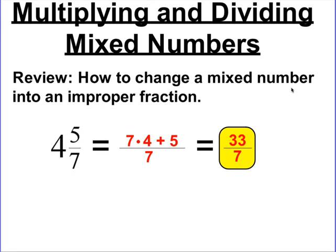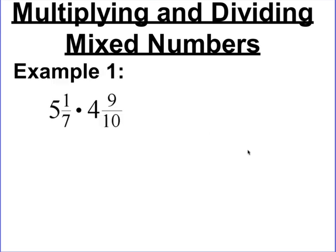We're going to do that with all of the mixed numbers in the problems first, and then we're going to use all of the rules you've already learned from multiplying and dividing fractions. Here's the first example: 5 and 1 sevenths times 4 and 9 tenths. The first thing I want to do is estimate our answer to see if the product we get at the end is going to make sense.